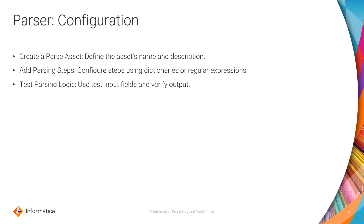Let's move on to the configuration part. How can we configure a parser asset? You can land on the CDQ checklist in the IACS and there you will see the option to create a parser asset. You define the name of the asset, the description, and then you can add steps. Each parsing step will parse one kind of pattern for data. You can use multiple parsing steps to parse multiple data types using dictionaries or regular expressions. You can use the testing field to give sample inputs and verify if the logic is working correctly.